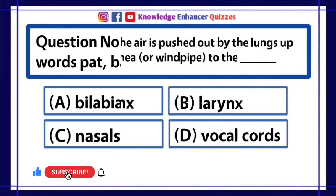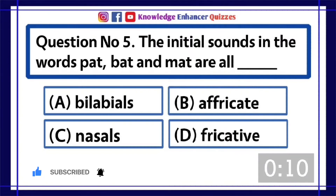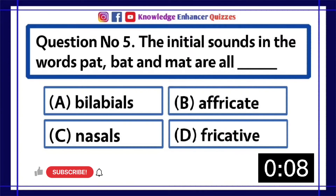Question number 5. The initial sounds in the words pat, bat and mad are all dash. A. Bilabials. B. Affricate. C. Nasals. D. Fricative.